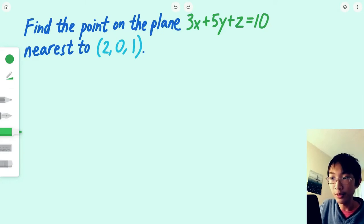So the problem is, find the point on the plane 3x plus 5y plus z equals 10, nearest to the point (2, 0, 1).